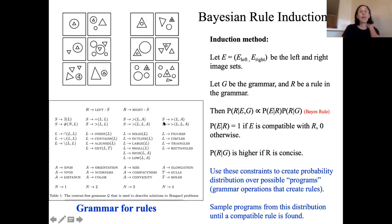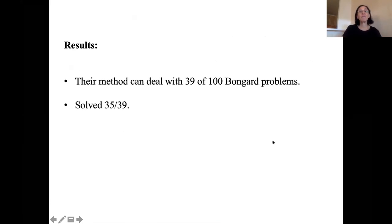You can imagine starting with this R left goes to the start symbol, start symbol goes to there exists something L, L can go to all of these. So you sample from this grammar to create these rules until you find something that's compatible. Their method was able to deal with, given their limits of their initial computer vision method, they could only deal in principle with 39 problems. And using this method, they solved 35 of them.